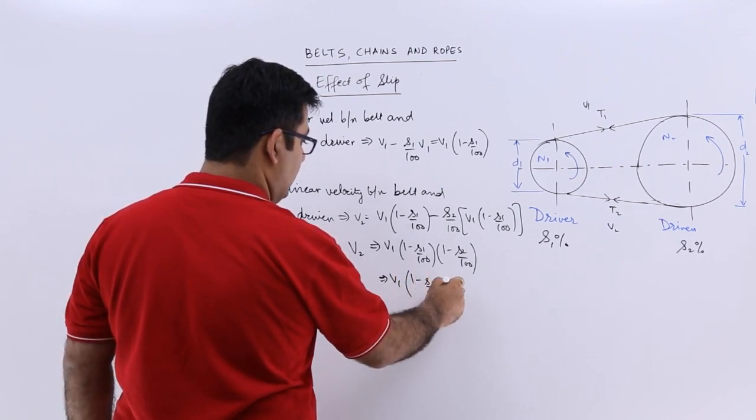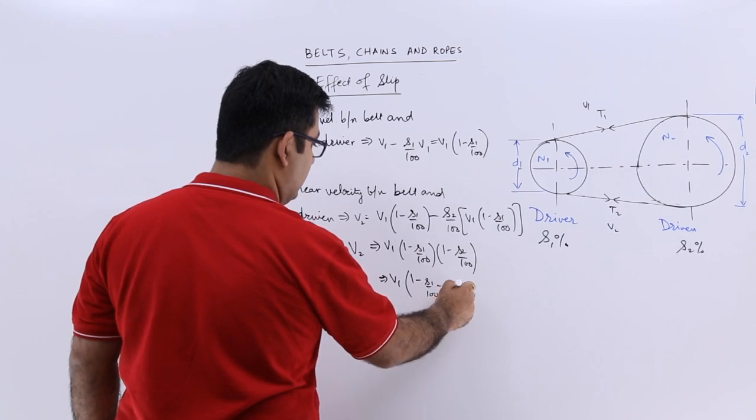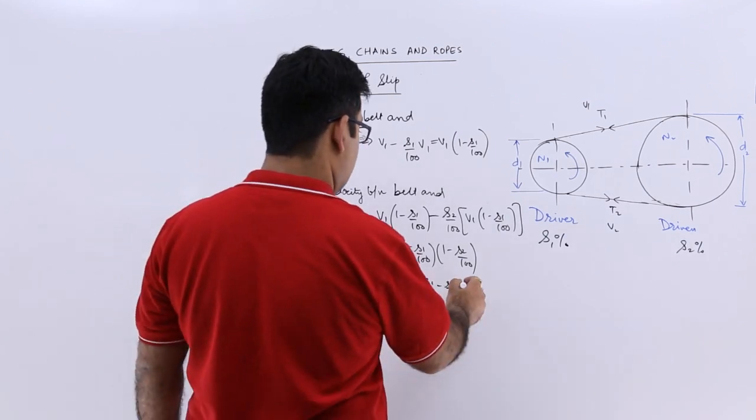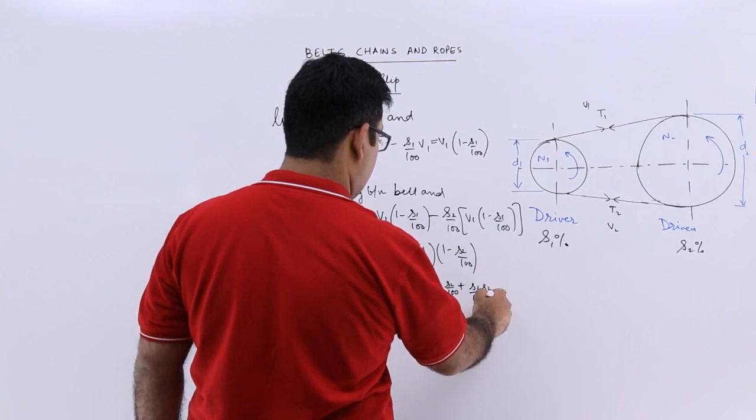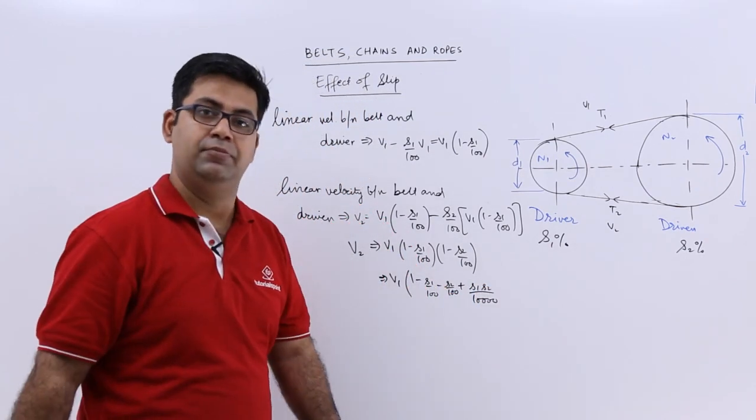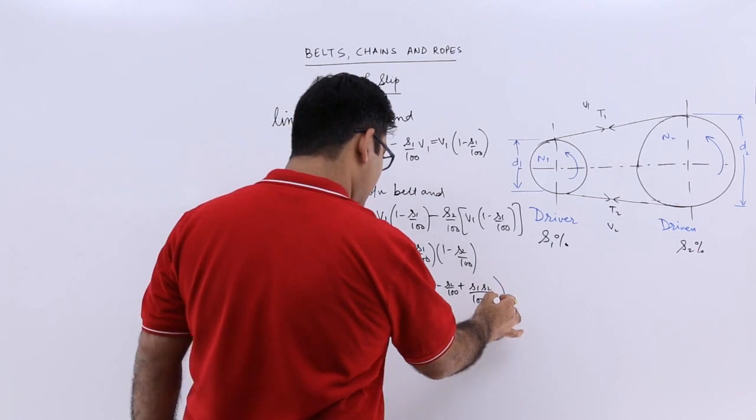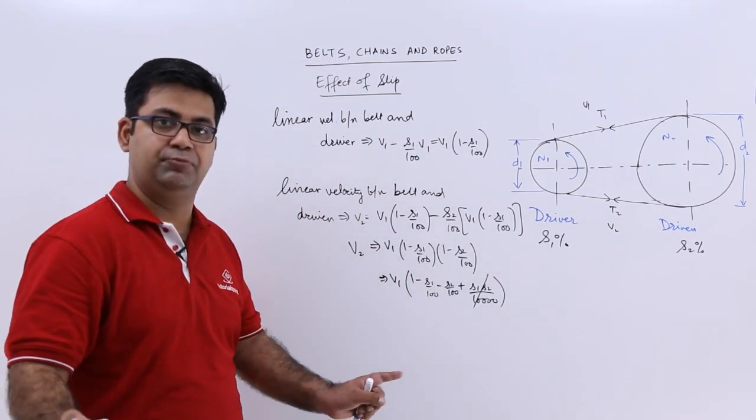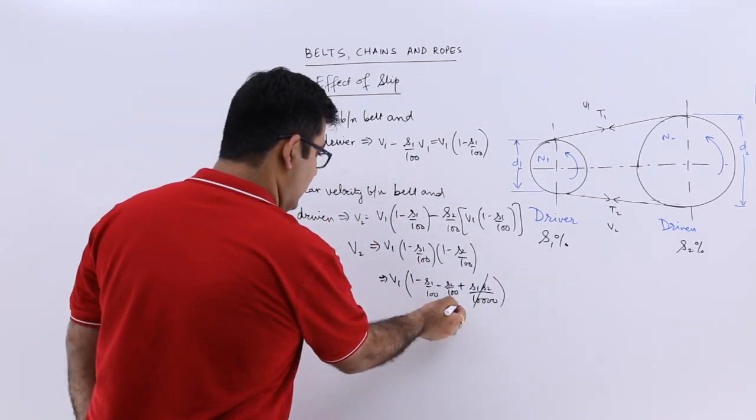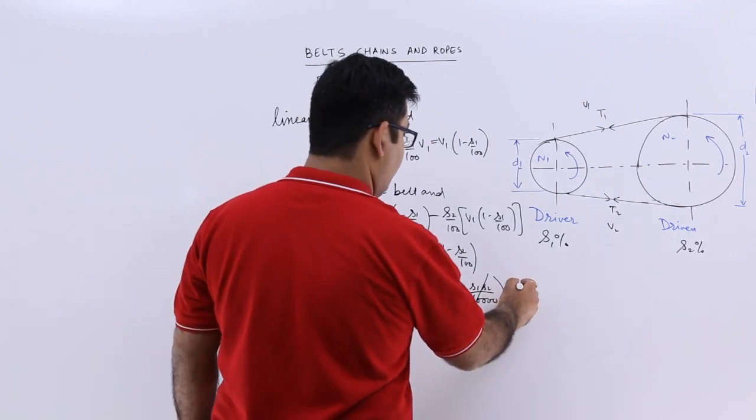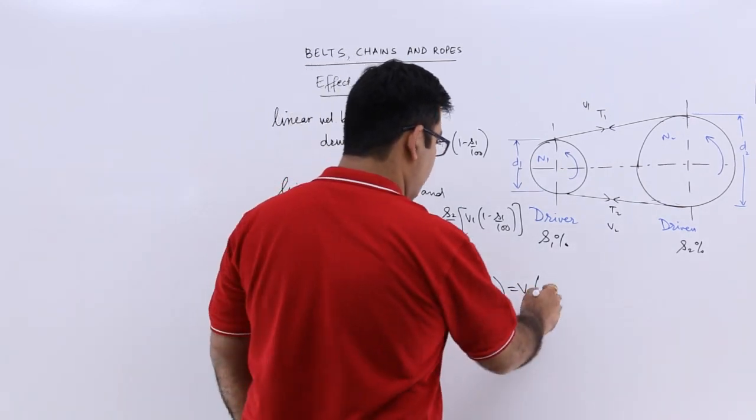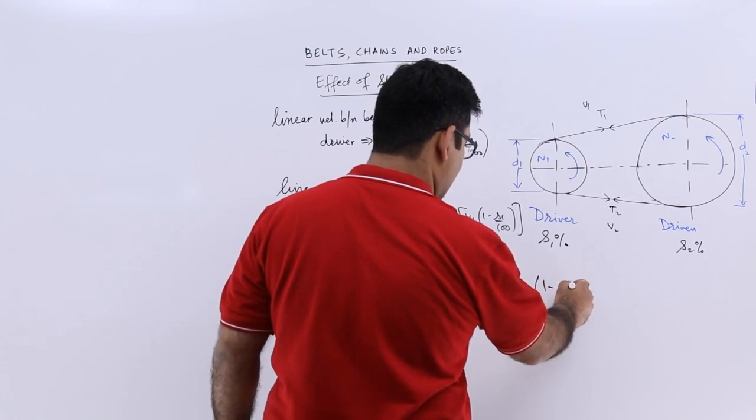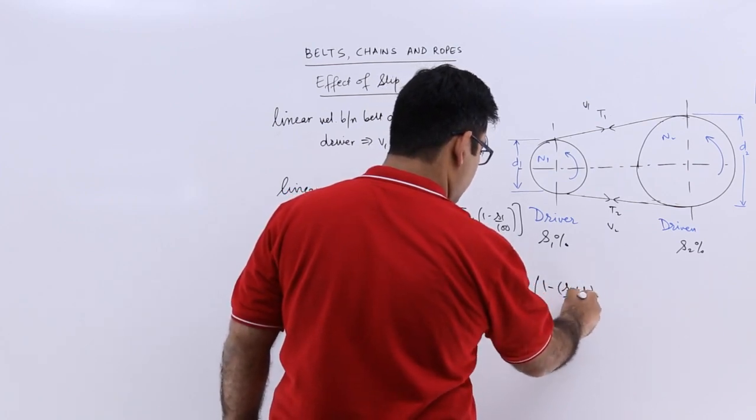So you can multiply these two: you will have v1 times (1 minus s1/100 minus s2/100 plus s1·s2/10000). Again you would be left with v1, take the minus common, and you will have (1 minus (s1 plus s2)/100).